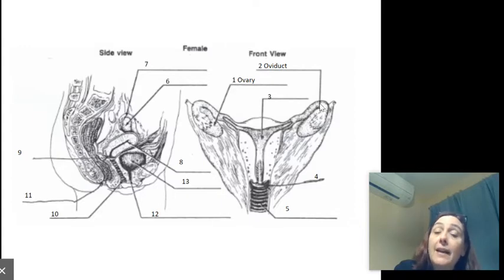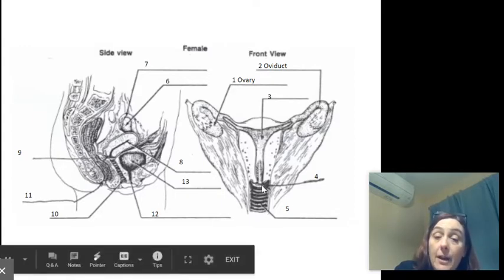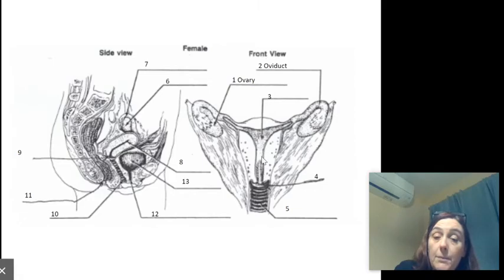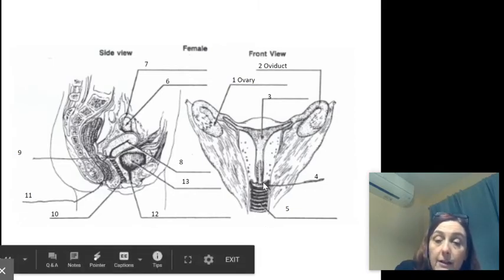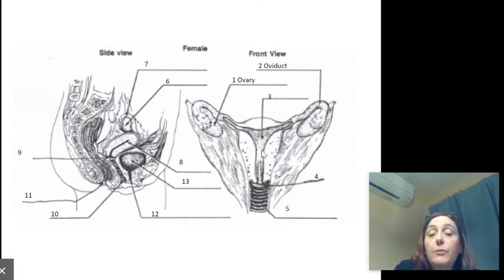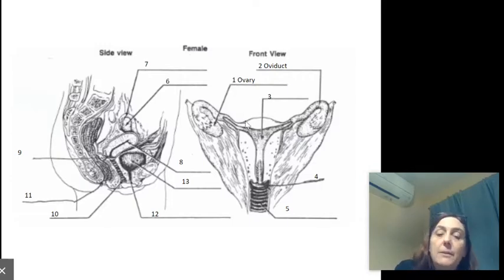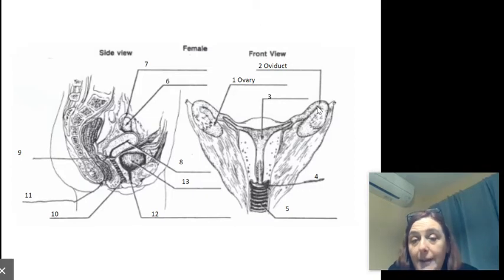If there was intercourse, the sperm would swim up through the vagina, through the cervix, up through the uterus, and there'd be some going that direction, some running into the walls, and then one would be up here and the sperm and the egg would fuse together. That's called fertilization.